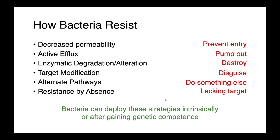Bacteria can resist antibiotics using a similarly broad spectrum of strategies — whether it's decreased permeability to prevent entry of the drug, active efflux (pumping it out before it can attach to its target), enzymatic degradation or alteration to destroy or inactivate the antimicrobial, modifying their targets so the drug doesn't recognize where it's supposed to bind, using alternate metabolic pathways to achieve the same physiological endpoint independently of the drug's target, or simple resistance by absence — lacking the target entirely. All of these strategies can be responsible for resistance either intrinsically or through acquired resistance.